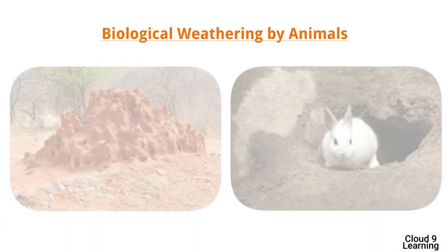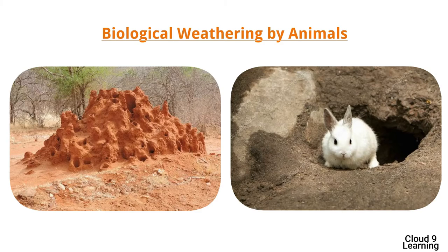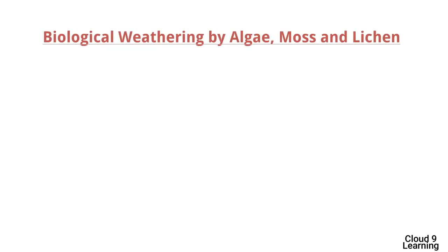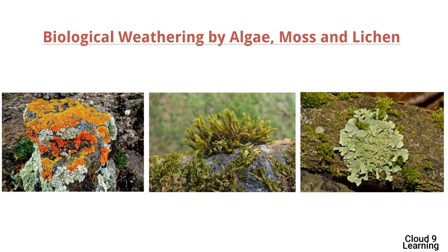Biological weathering by animals: we have seen ants making ant cells, rats, mice, rabbits, and other worms and insects making burrows in the ground. Because of all these activities, weathering of rock occurs. Biological weathering by algae, moss, and lichen: algae, moss, lichen, and other flora grow on rocks and produce weak acids on them, leading to the weathering of rocks.